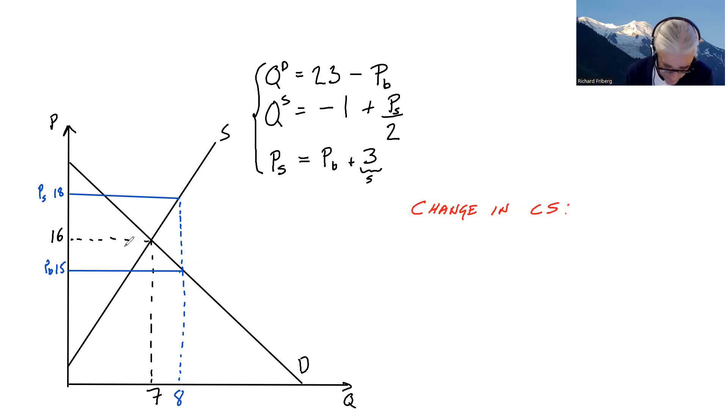The consumer surplus now is this greater triangle below the demand curve up until the price of 15. If we're looking at this whole area here, the area of B is an increase in consumer surplus. Prices are falling and consumption expands. Consumers benefit from this in terms of a higher consumer surplus.